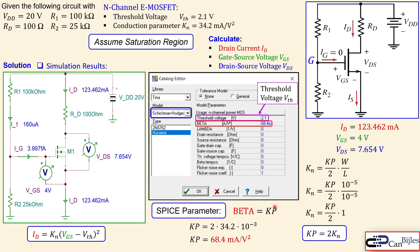For the remaining model parameters, set lambda (channel length modulation) to zero, and set drain resistance, gate resistance, source resistance, and capacitors all to zero as well. This gives us the ideal MOSFET model, since the formula we used is only valid for the ideal case without channel length modulation or temperature effects.